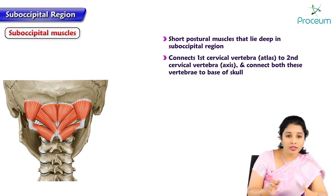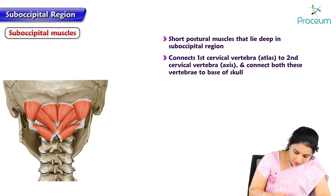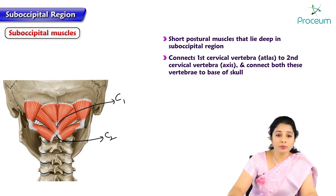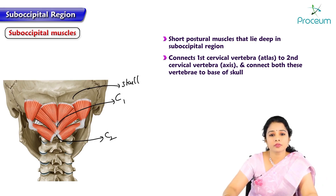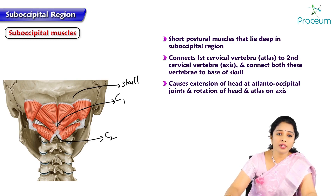Here the muscles are covering the atlas and axis. This is the spine of the second cervical vertebra, that is axis. Here is the tubercle of C1, that is atlas, and they connect both the vertebrae to the base of the skull. We can see they are connecting to the skull as well. The suboccipital muscles all together cause extension of the head at the atlanto-occipital joint and rotation of the head at the atlanto-axial joint.